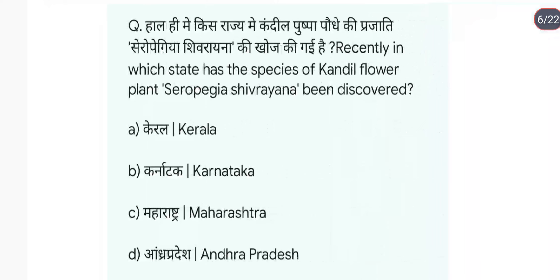Recently in which state has the species of lantern flower plant Ceropegia sivarayana been discovered? It has been discovered in Maharashtra. Answer is C.